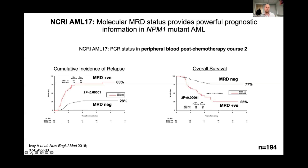These are results from the AML17 study comparing patients who tested MRD positive with those who tested MRD negative in the peripheral blood after the second cycle of chemotherapy. MRD positive patients had a very high incidence of relapse of 83% and a low overall survival of 25% at three years, which would justify giving those patients an upfront bone marrow transplant. On the other hand, patients who tested MRD negative had a low incidence of relapse of 28% at three years — low, but importantly not zero, as a significant proportion will relapse in the first two years.